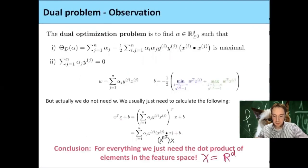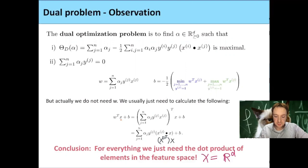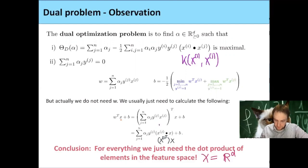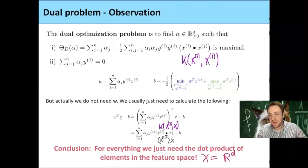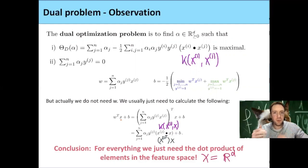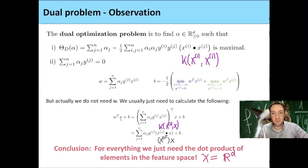A kernel function is a map which takes two elements in the input space and maps them to a real number such that k(x, x') equals the dot product phi(x) · phi(x') in the feature space. Going back to our dual optimization problem, wherever we have the dot product x_i^T x_j, we can just replace it by the kernel function k(x_i, x_j). And similarly, when classifying a new point X, we replace x_j^T X by the kernel k(x_j, X). This gives us the possibility to map our input space into higher — maybe ten-dimensional or even infinite-dimensional — feature spaces.